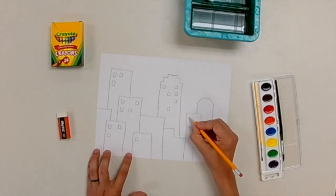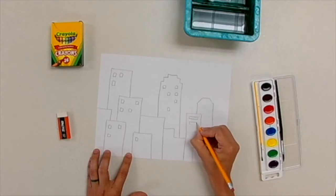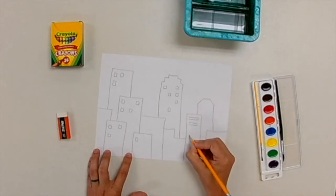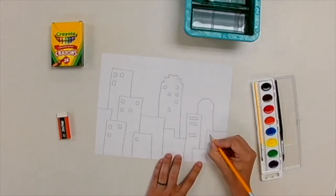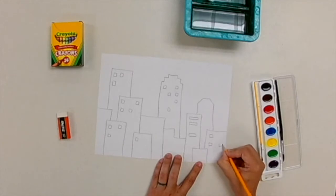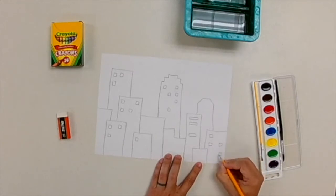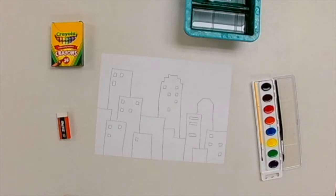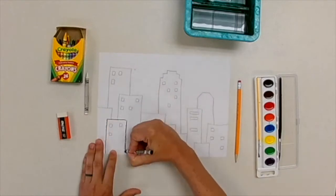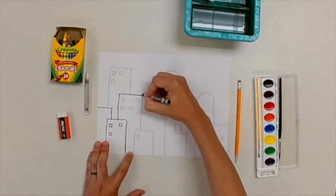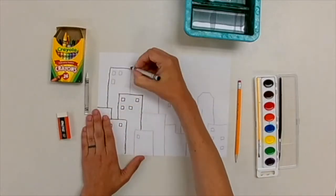I'm going to get my crayons out and use a black crayon to trace over all of the pencil on my city. The reason why I'm doing this is because crayons are made out of wax, and when you start to paint, those wax lines will help keep the paint from mixing with other colors of paint. It won't stop it completely, but it helps a lot from colors touching. Now I'm going to speed this up so you don't have to sit here and watch me trace the whole thing.